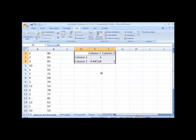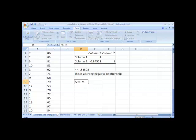Here I have an R of negative .84528. We could say this is a strong negative relationship.